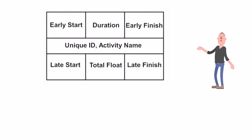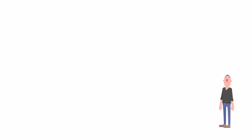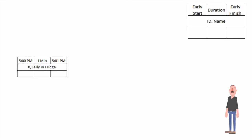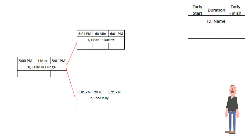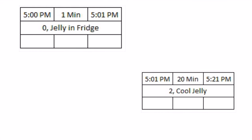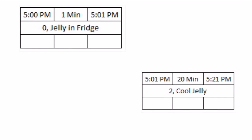Let's map out our sandwich project using this method to understand what these labels mean. With our first scenario, we were putting the jelly in the refrigerator ourselves, so that will be our first activity. The early start for this activity was 5 p.m., which simply means that this activity can't start any earlier than 5 p.m. The duration is one minute, and then the early finish is simply the early start plus the duration, so 5:01 p.m. is our early finish. This activity precedes two other activities: leaving to get our peanut butter and letting the jelly cool in the refrigerator. The earliest we can start allowing the jelly to cool is 5:01 p.m., so our early start for letting the jelly cool equals the early finish of the last activity. The duration for letting the jelly cool is 20 minutes, so the early finish is 5:01 plus 20 minutes, which equals 5:21.